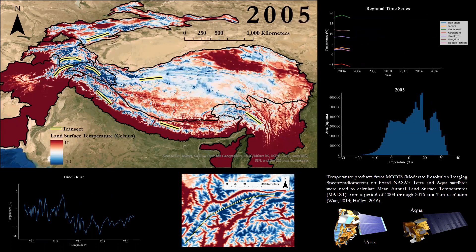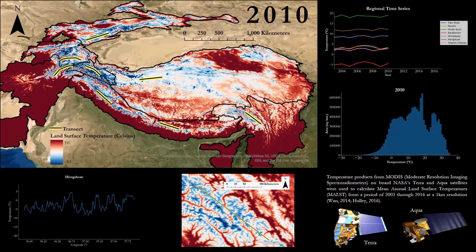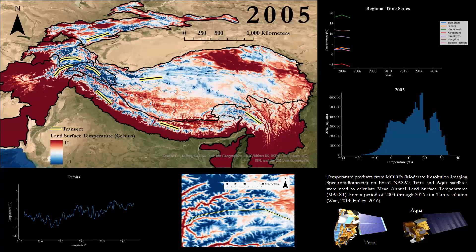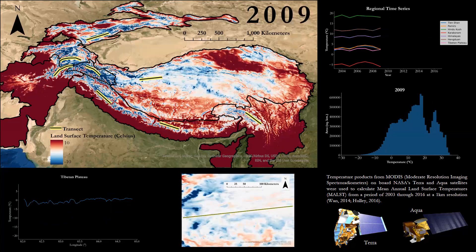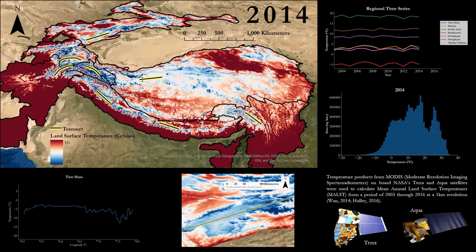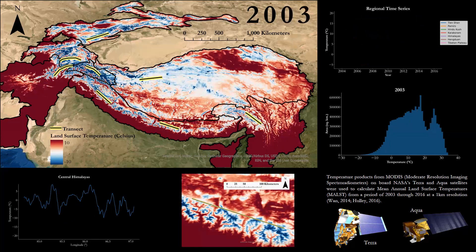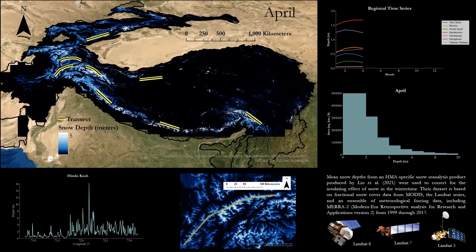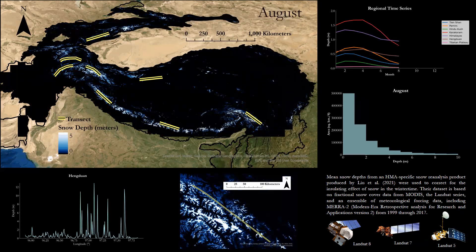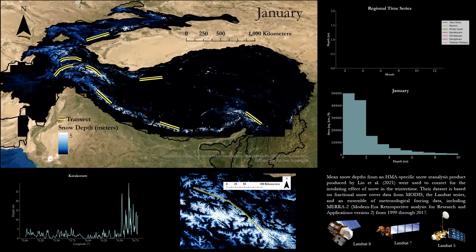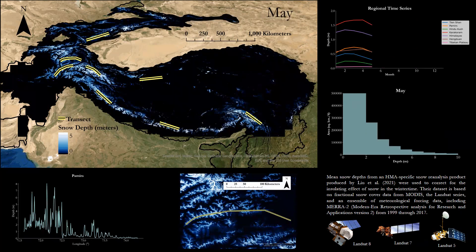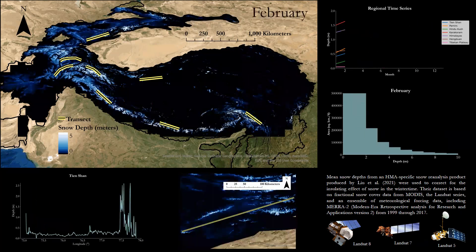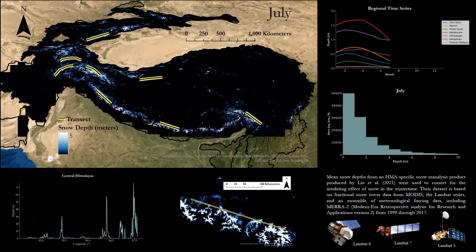While warming is not obvious regionally, the histogram shows a marginal shift to the right approaching year 2016. The panels in the lower left show example transects and inset maps of mean annual land surface temperature for different subregions. However, glaciers are common as well — permanent snow and ice cover prevents an accurate reading of land surface temperature, especially where snow cover is persistent, because snow depth has an insulating effect on the ground. I used mean snow depth estimates generated by Liu, Feng, and Margulis, specific to the High Mountain Asia region, produced in 2021, to correct the land surface temperature averages at a monthly time step. Their dataset was an ensemble product based on fractional snow cover data from MODIS and the Landsat series, as well as meteorological forcing data from MERRA-2, or Modern Era Retrospective Analysis for Research and Applications.